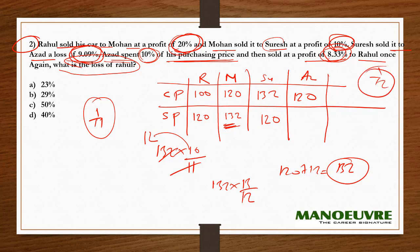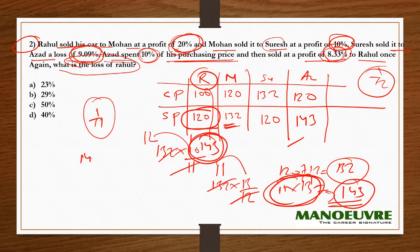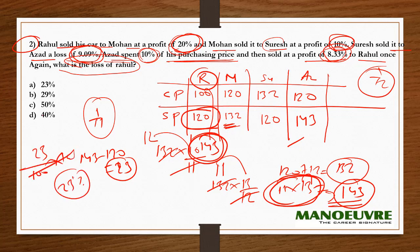So 132 × 13/12: the 12 cancels, leaving 11 × 13 = 143. So Rs. 143 is the selling price for Azad and the cost price for Rahul when he buys it back. Rahul's total receipts were Rs. 120 (what he sold the car for), but his cost price now is Rs. 143. So the loss is 143 − 120 = 23. Loss percent = 23/100 × 100 = 23 percent. So 23 percent is the loss for Rahul.